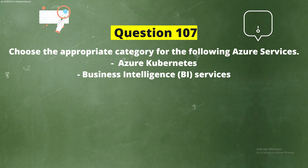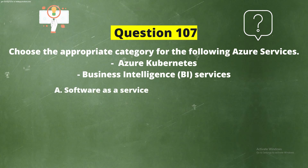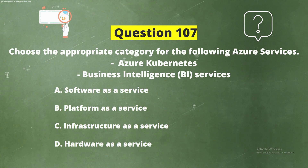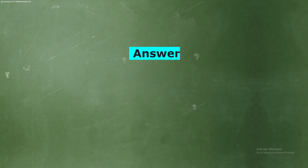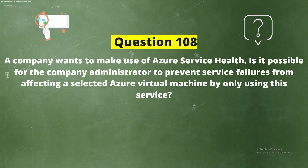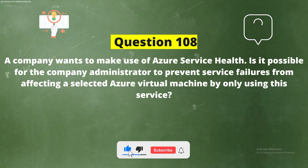Question 107: Choose the appropriate category for the following Azure services — Azure Kubernetes and Business Intelligence (BI) services. The options are: Software as a Service, Platform as a Service, Infrastructure as a Service, and Hardware as a Service. The correct answer is Option B: Platform as a Service. Kubernetes and BI services come under the Platform as a Service category.